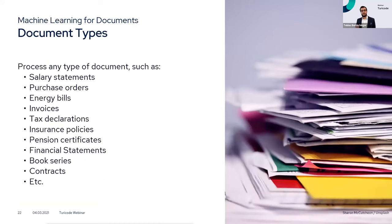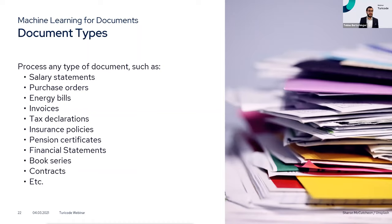Since Turicode has existed for five years, we've come across many different document types. We're not specialized in one specific type — we can process basically anything. We've worked with salary statements where a bank uses our software to extract up to 40 data points per statement, as well as invoices, tax declarations for logistics companies, and more. The most important point is the 'et cetera' — we know a wide variety of document types and can process them.